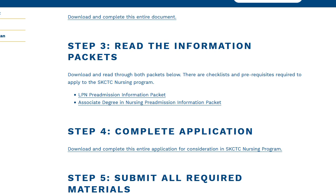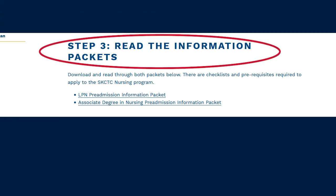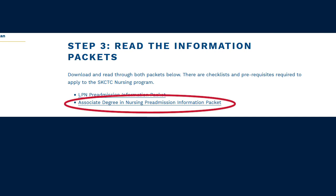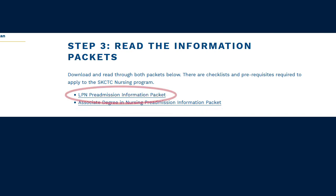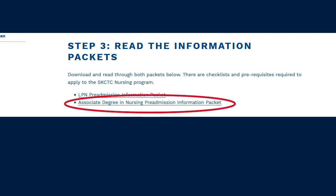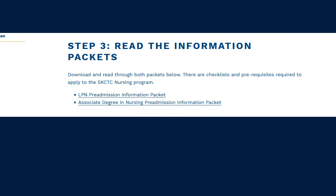The next step of our pre-admission conference online is to read the information packet for the program you are interested in. Regardless of campus, for the associate degree RN program, you will click that packet. If you are interested in the LPN program on the Cumberland campus, you're going to click the LPN pre-admission information packet. Read through it thoroughly — it gives you information on our accreditation, the cost of the program, and how to sign up for the PAX exam if you are applying for either program. For LPN to RN bridge students, it gives information on the NACE exam, as well as how we score and select students for admission.